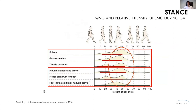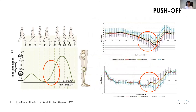A deeper look at soleus and gastrocnemius activation: maximum peak activation occurs at mid gait cycle — during stance. They engage to stop the knee from going completely into extension, and then provide just enough push to unlock the knee and initiate push-off. If this task is performed well, it leads to a proper push-off.